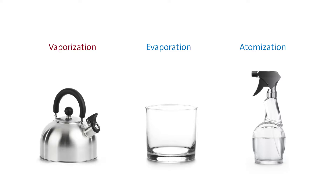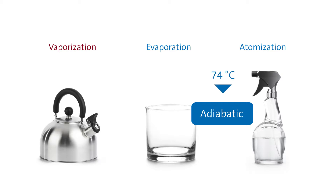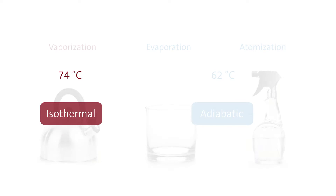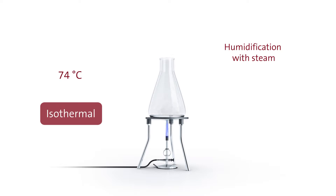The essential difference between these methods lies in the fact that with adiabatic methods air is cooled down. However, the air temperature remains constant with steam humidification. Steam does not require additional energy to enter into gaseous state since it already is gaseous.